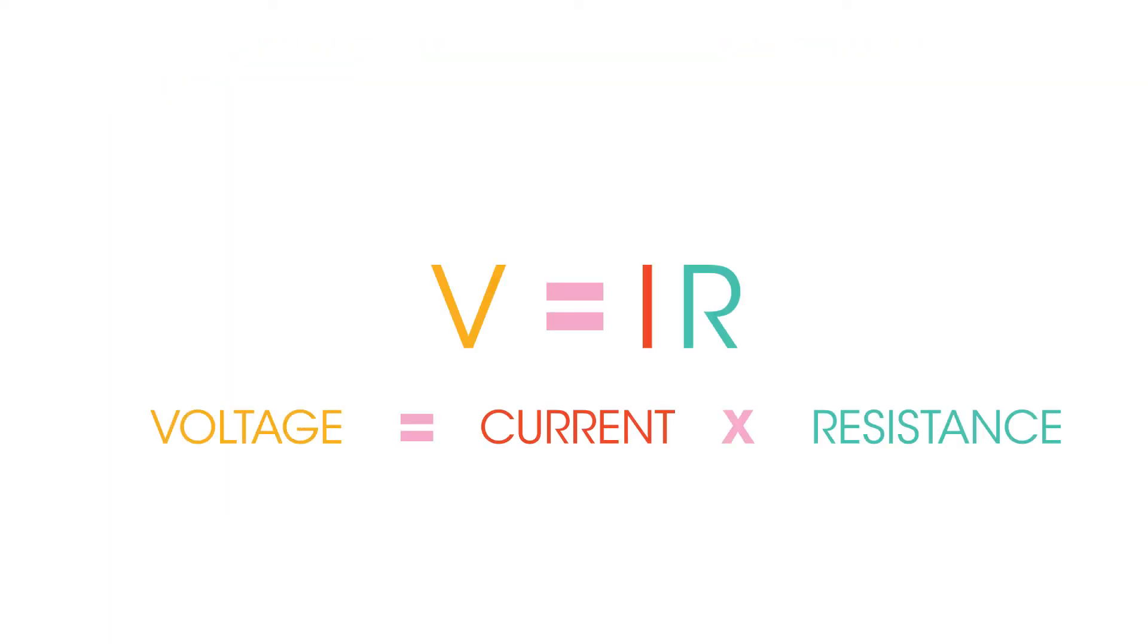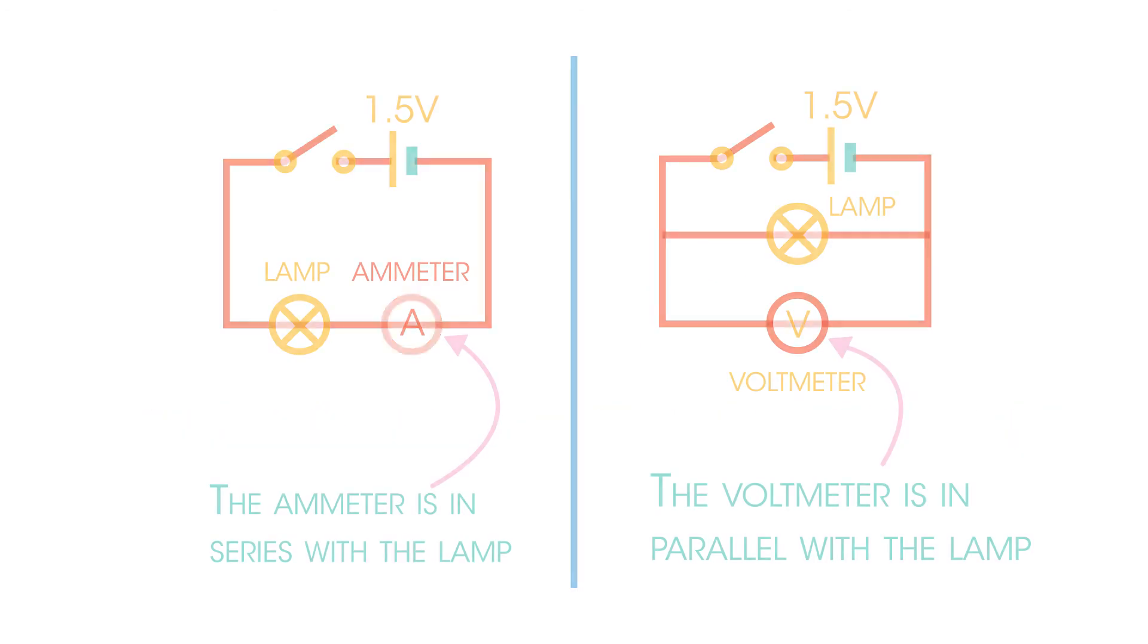In summary, we have learned that the voltage is equal to the current multiplied by the resistance, and how to measure the potential difference and the current across components. Thanks for watching.